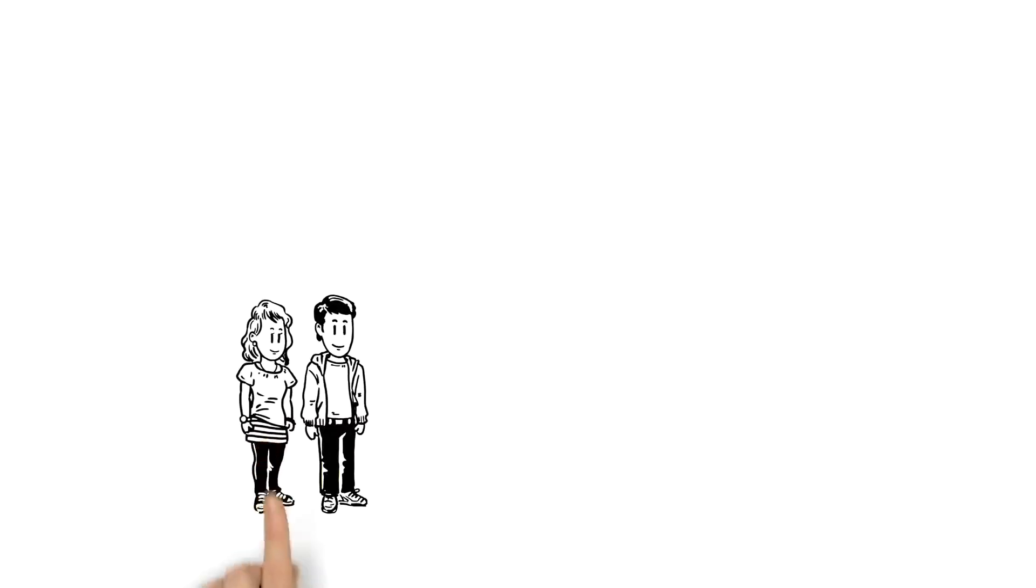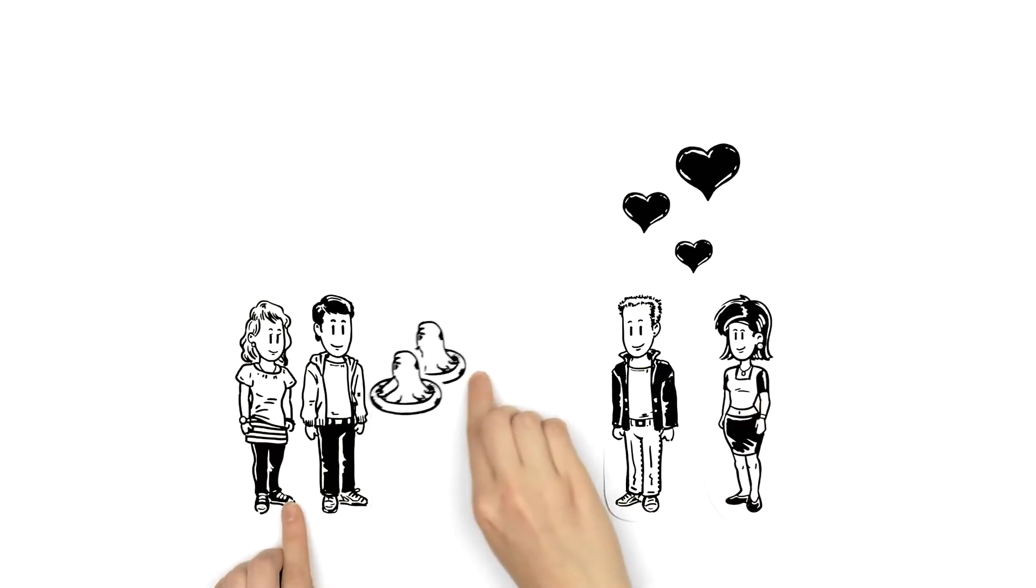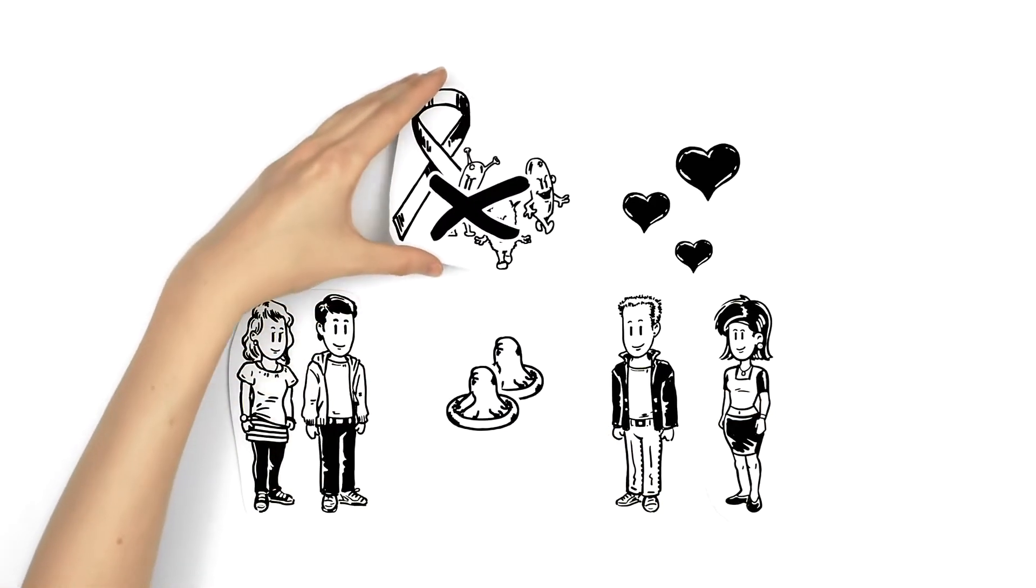Now Lena and Kamal know the score. Speaking about scoring, Kamal's friend Jonas is a real ladies' man. A lot of girls like him. That's why Kamal slips him a few condoms. As always, safety first.